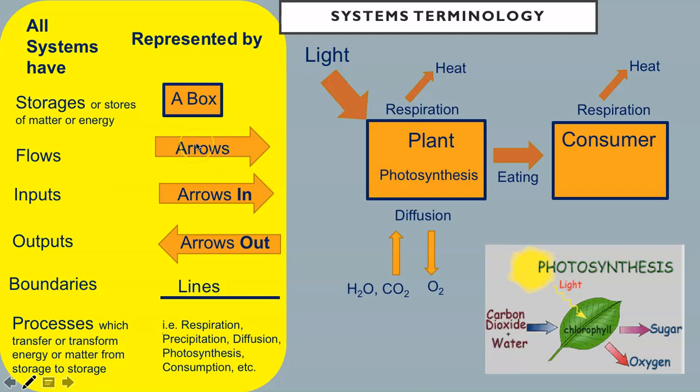All systems have flows, which are represented by arrows. All systems have inputs, which are represented by arrows flowing in to the system. In this example, the plant system, there is an energy input of light and matter inputs of water and carbon dioxide. All systems have outputs, represented by arrows flowing out of the system. In this example of the plant system, there is energy loss of heat and matter outputs of oxygen. If the plant is eaten by a consumer, there is a flow of chemical energy into the consumer from the plant, an output from the plant, and an input to the consumer.